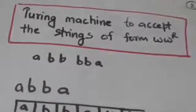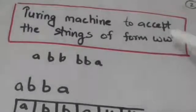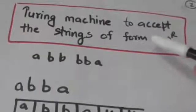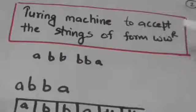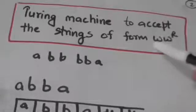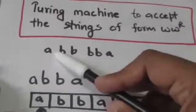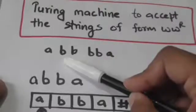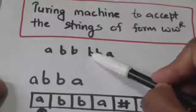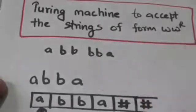Now let us see the working of a Turing machine which accepts strings of the form WWR, where WR is the reverse string of string W. In strings of this form, the first symbol is the same as the last symbol, the second symbol is the same as the second-last symbol, the third symbol is the same as the third symbol from last, and so on.